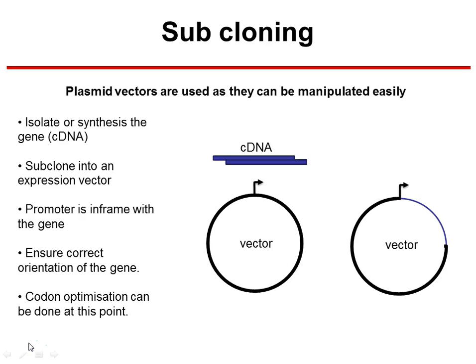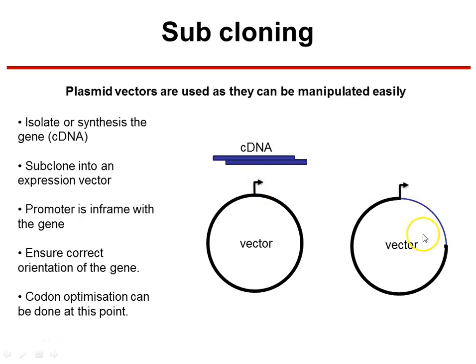When we're working with plasmid vectors, we talk about subcloning. Subcloning means the insertion of a section of DNA into the vector. Typically, we work with cDNA. What we do is cut the cDNA and the vector and insert them together — we call it cutting and sticking.